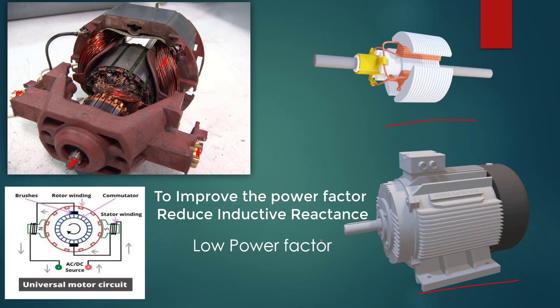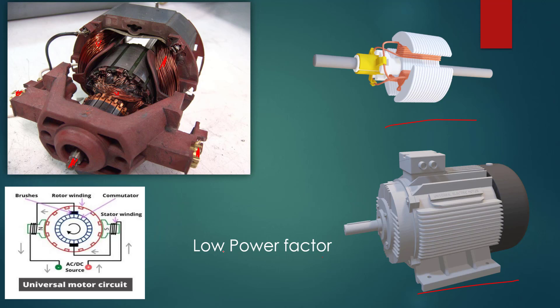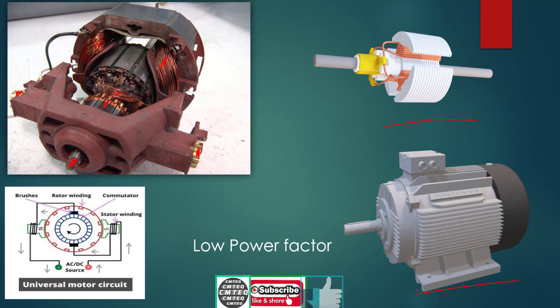The construction of the universal motor is very similar to a DC series motor; however, the whole magnetic field structure is laminated to reduce eddy current and hysteresis losses. The armature has a commutator and brushes similar to those of a small DC motor, as we can see here.